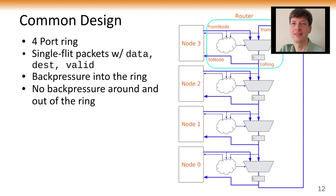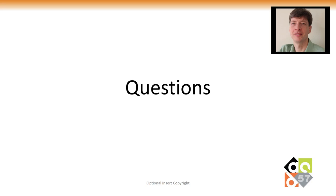All three of us will present our respective technologies in the context of a common design. For that design, we've chosen a very simple ring. The ring has four ports; packets injected into and out of the ring are single-flit packets — just a word of data with an associated destination and valid bit. There's back pressure from the ring, meaning packets will enter only into available slots, then travel freely around the ring until they reach their destination and hop off — with no back pressure assumed at the egress. If there's one technology you want to explore, you can view those presentations independently, but I encourage you to view all three, as they each bring something unique to the table.